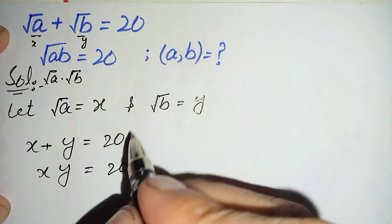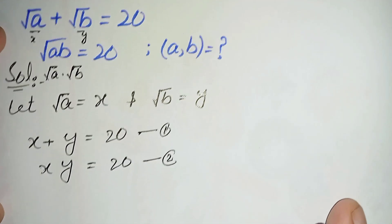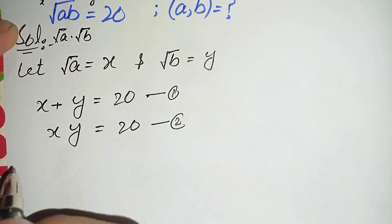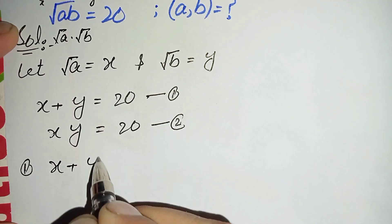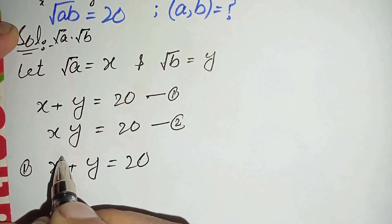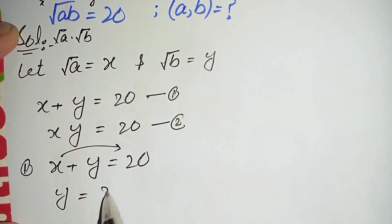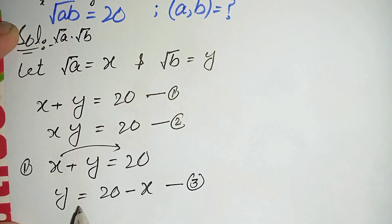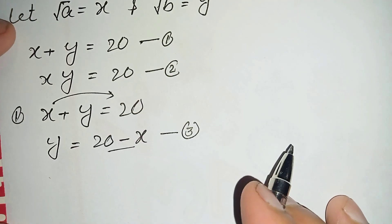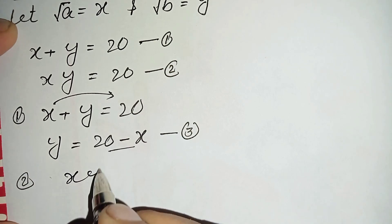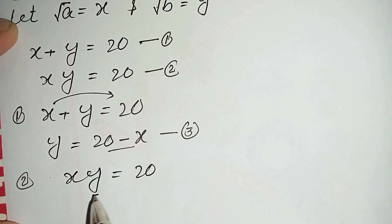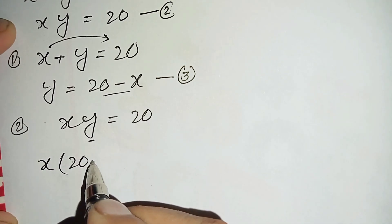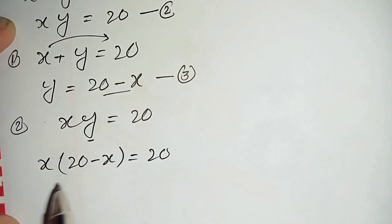Let us call these equation number one and equation number two. We will solve these two equations for x and y, then return to our substitution. From equation one, x plus y = 20, we move x to the right-hand side to get y = 20 minus x. Call this equation three. We substitute this into equation two: x times y = 20, replacing y with 20 minus x.